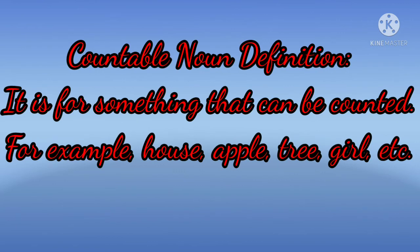Countable Noun: It is for something that can be counted. For example, we can count the number of houses, number of apples, trees, girls, etc.